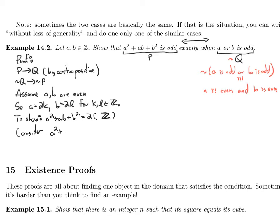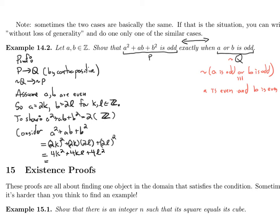Let's consider a² + ab + b². We fill in: a = 2k, so this is (2k)² + (2k)(2l) + (2l)². Just by looking at this, you can see that each of these three terms has a factor of two, so we're looking good. This simplifies to 4k² + 4kl + 4l².